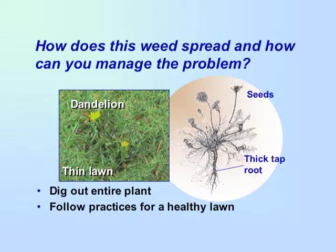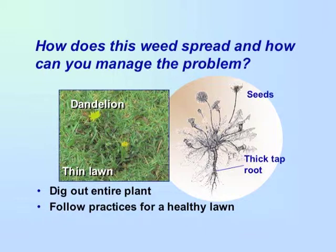Refer to the Healthy Lawn Guide on the UC IPM website for more information on lawn management. Proper weed identification is important. The weed species present can be a good indication of an underlying problem. Remember that weeds need to be removed when they are young, before seeds or vegetative structures such as tubers, rhizomes, or stolons form. Be sure to always remove the entire plant.